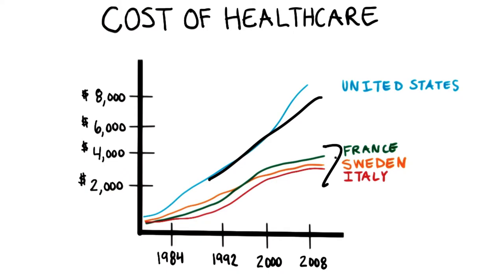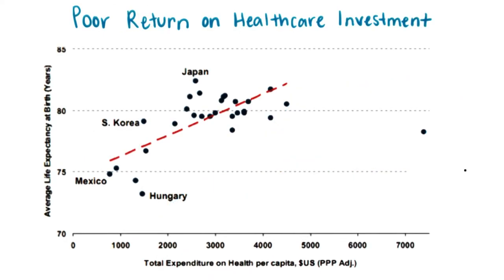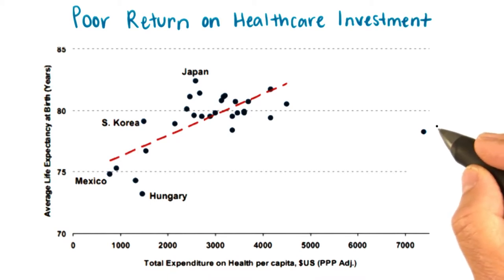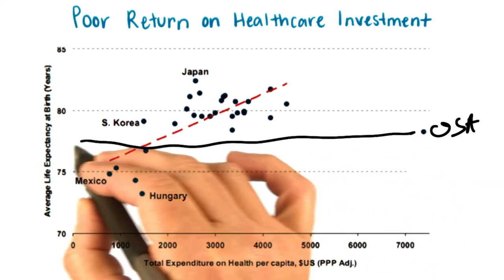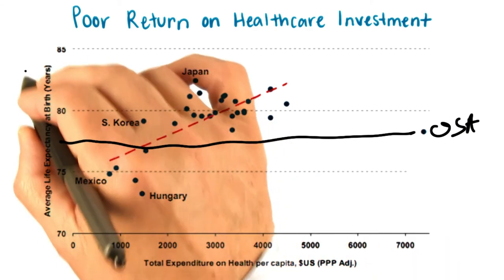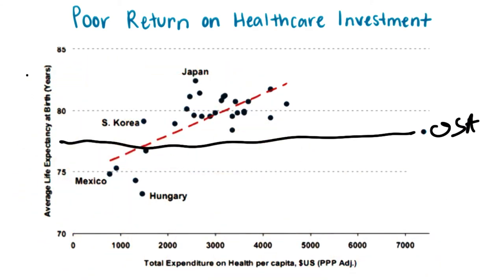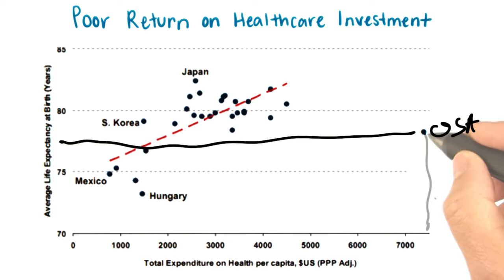The inexorable growth of chronic disease is one of the key reasons why. That spending might be okay if we were getting a great result, but again comparing the U.S. to this group of industrialized countries and even some others, we rank 26th in life expectancy, shown here. We're also a clear outlier, spending far more but dying younger than the citizens of these other countries.